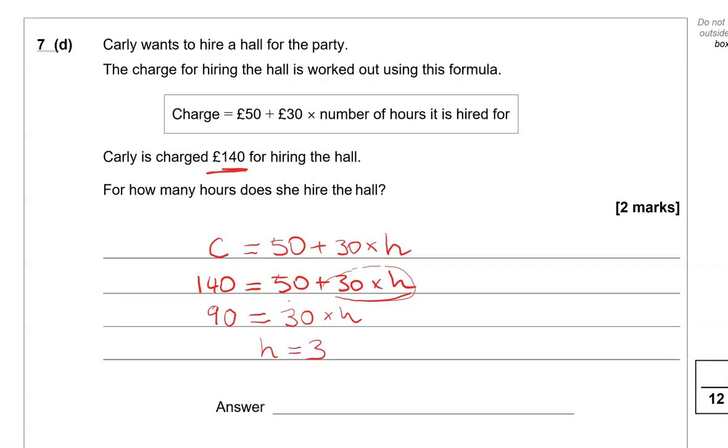So let's just replace this here. We do 140 is equal to 50 plus 30 times 3. So 30 times 3 is 90 plus 50. Does that equal 140? It does. So we've done it correctly. So the answer is 3.